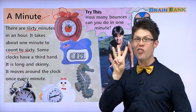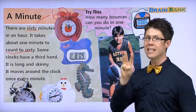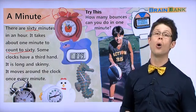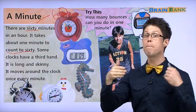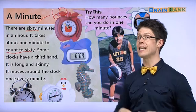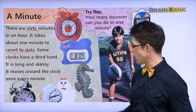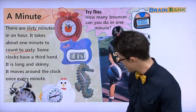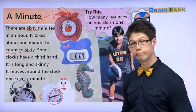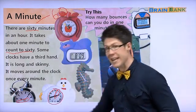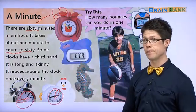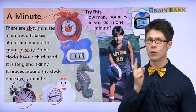Some clocks have a third hand. 어떤 시계가 세 개 있어요 — hands. They have three hands: one hand is the hour hand, that's the small hand; one hand is the minute hand, that's the big hand. Some clocks have a third hand. It is long and skinny. 날씬해요. It moves around the clock once every minute. See this red hand? In one minute, it goes around the clock one time. What kind of hand is that? We'll find out soon.